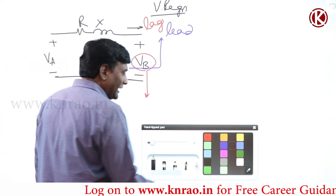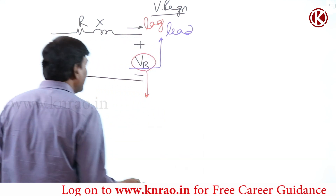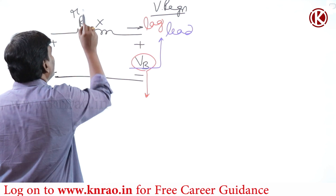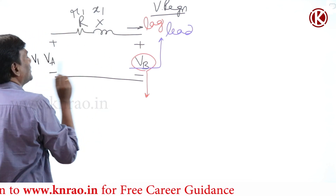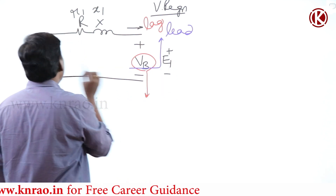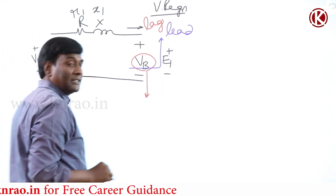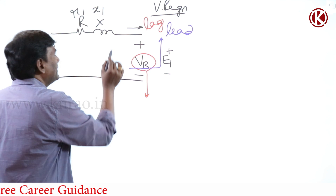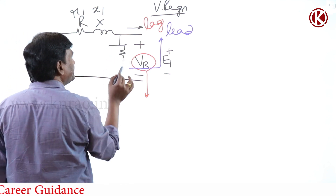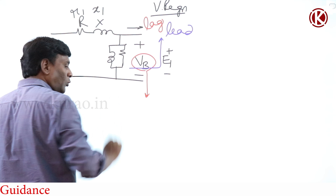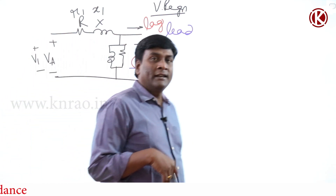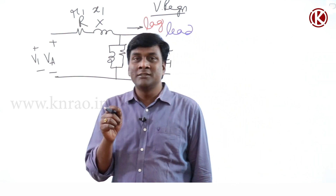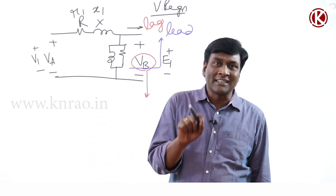Now let us apply the same concept across the primary leakage impedance. Here we have R1, X1, V1, and E1. Considering the exact equivalent circuit, we have to keep the shunt branch. Till now we used to think that the operating flux of the transformer is going to be constant.